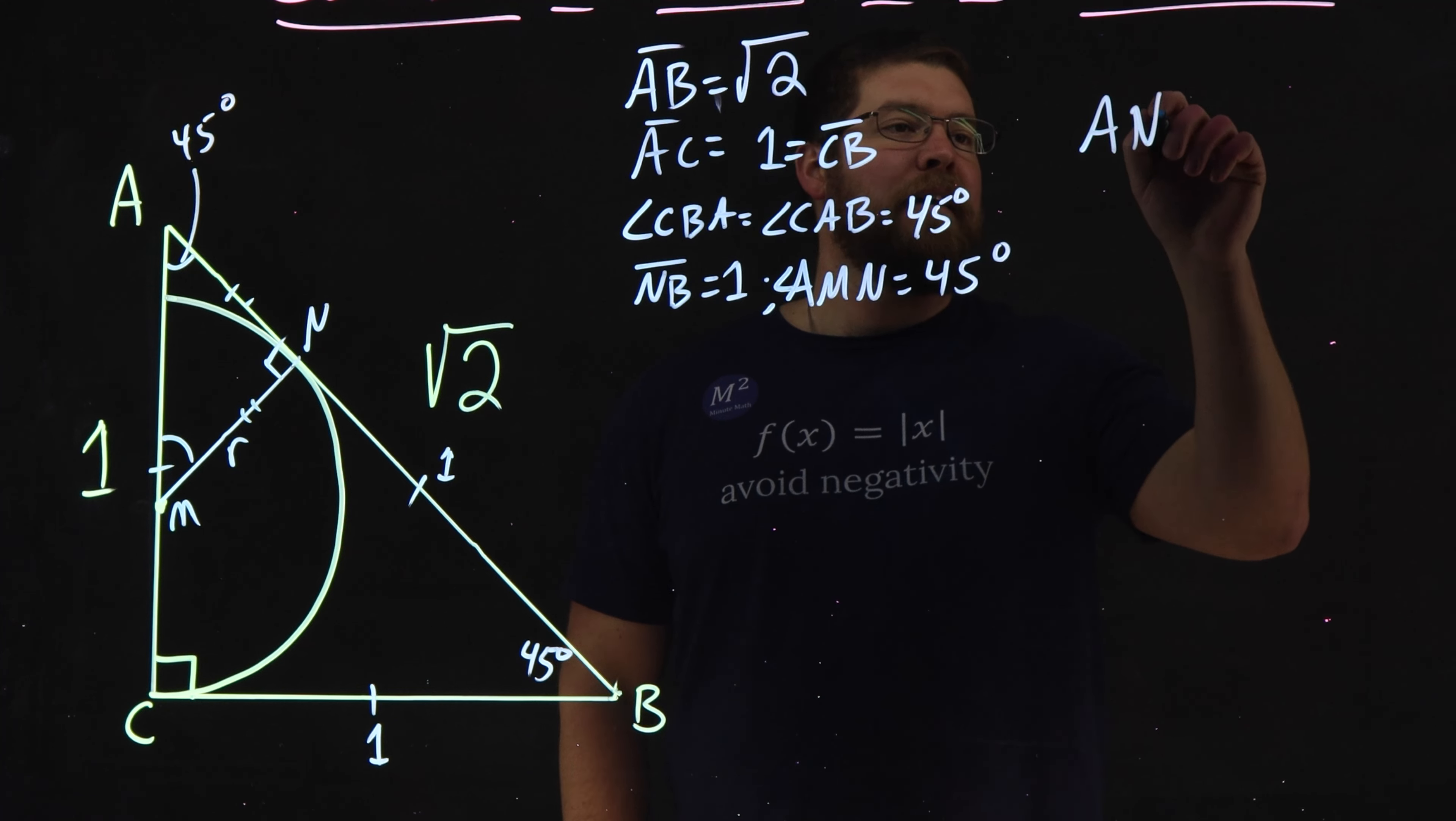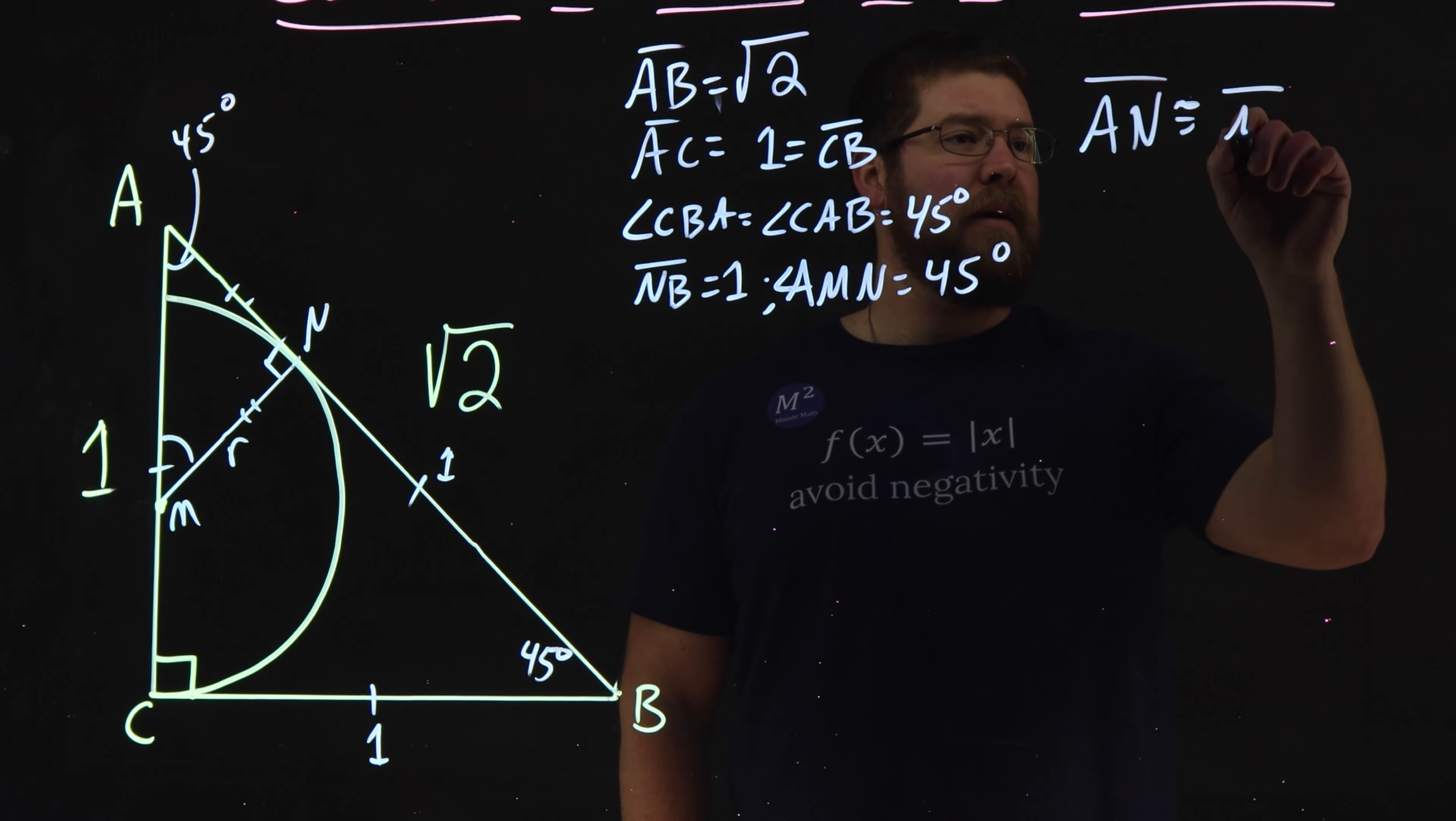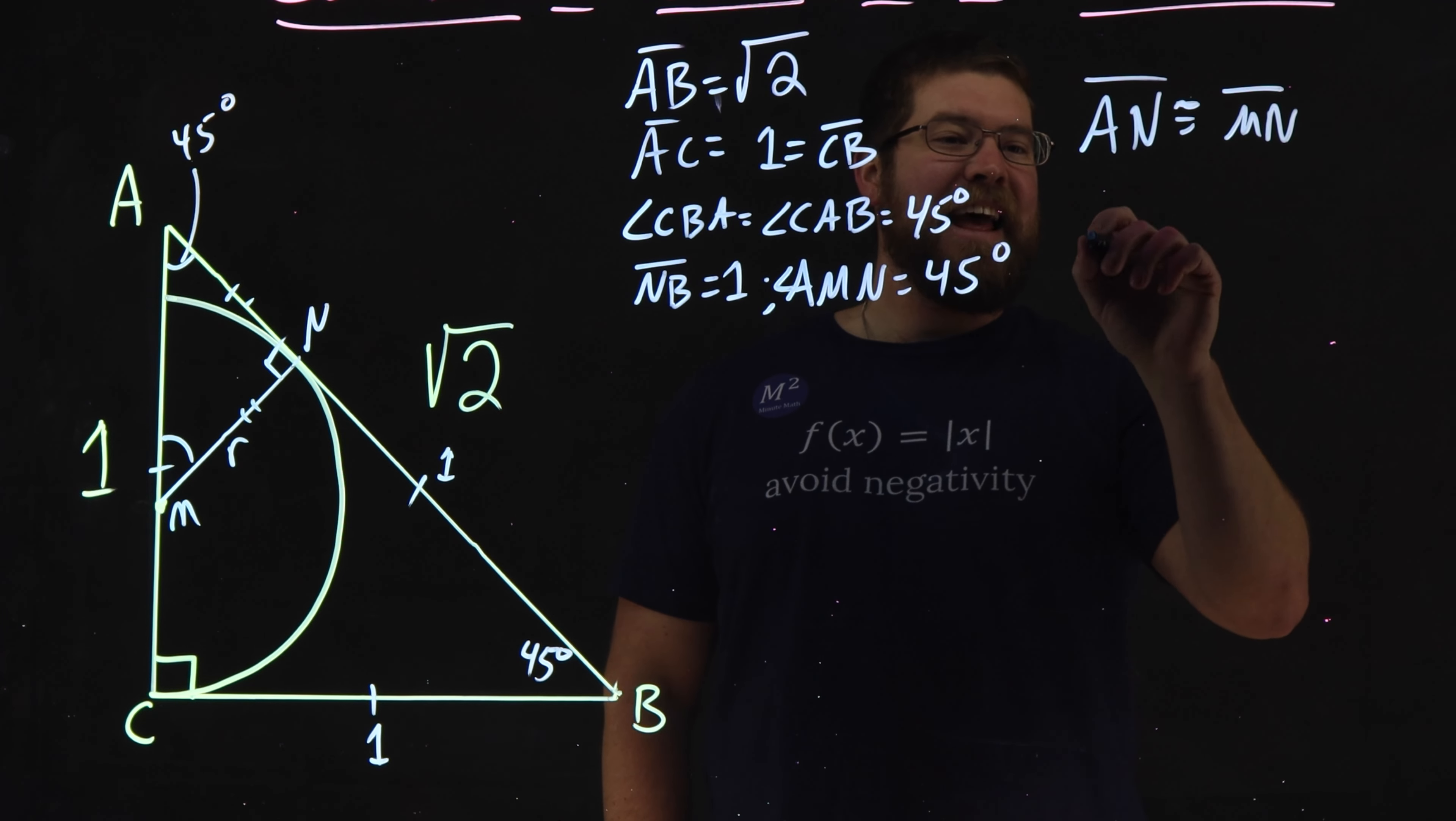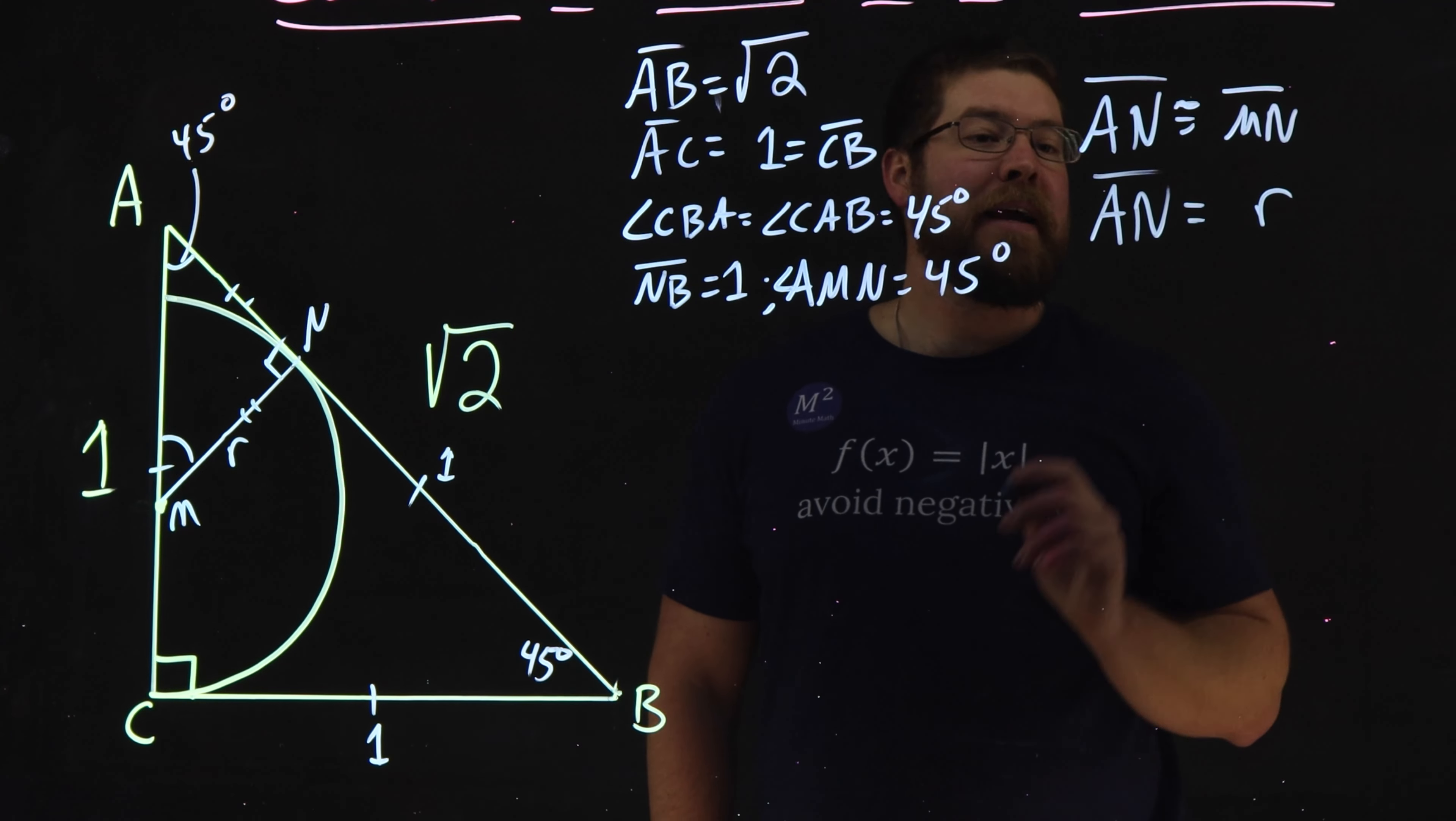So AN is congruent to MN, which means that AN, that length, is equal to length R, our radius.